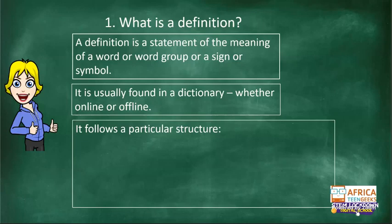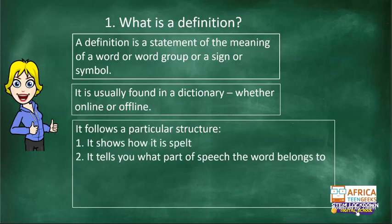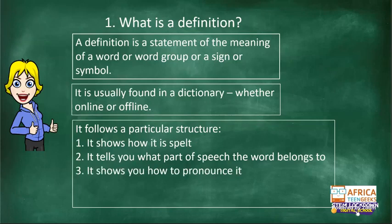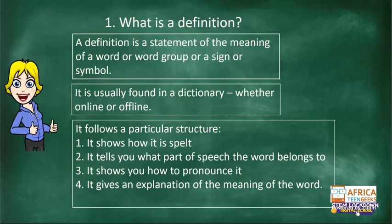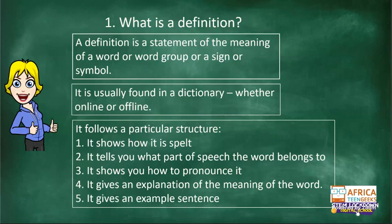The definition is more than just an explanation of the meaning of a word. If you go to an online dictionary, they'll show you: how it's spelled, what part of speech it belongs to — noun, verb, adverb, or adjective — how to pronounce the word, an explanation of the meaning, and then an example sentence. So there are five parts to a definition.